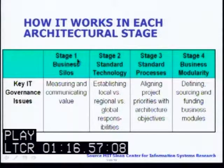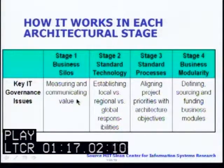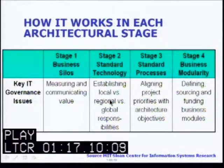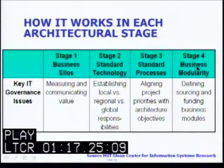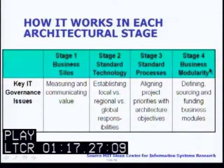Considering the key IT governance issues: stage one, business silos, looks at measuring and communicating value; stage two, standardized technology, looks at establishing local versus regional versus global responsibilities; stage three, standardized processes, looks at aligning project priorities with architecture objectives; and stage four, business modularity, looks at defining sourcing and funding business modules.